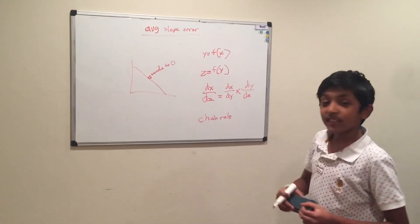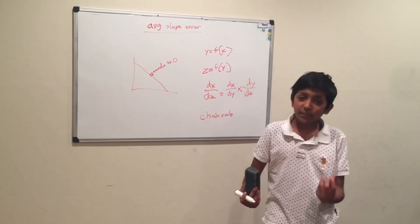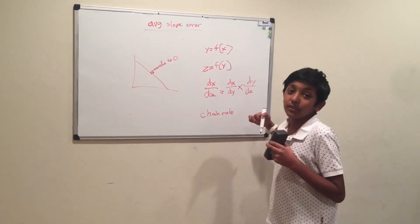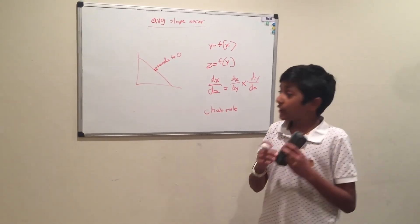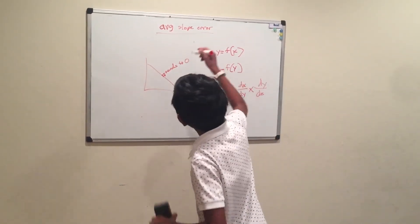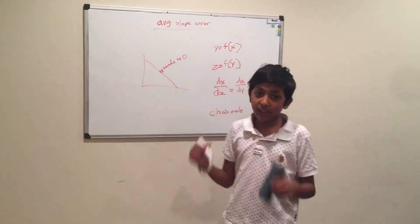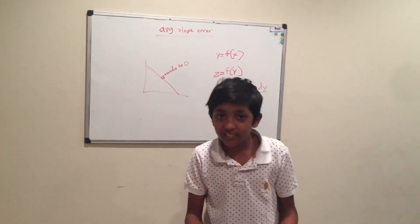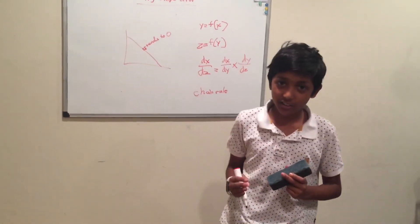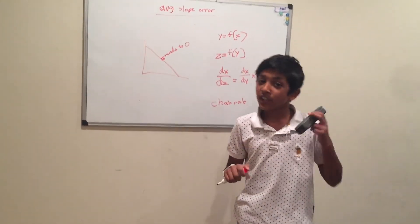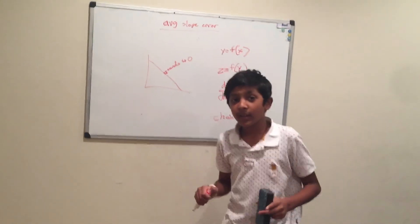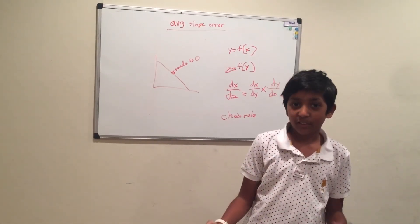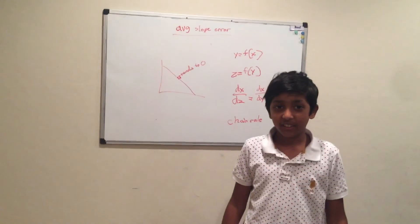So with some programming, the other functions, and this chain rule of calculus, you get the average slope error function which is the heart and key of calculus. Thank you for watching, like, share and subscribe, and keep watching my videos for more fun information.